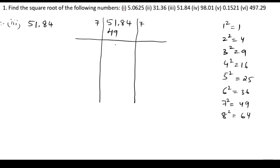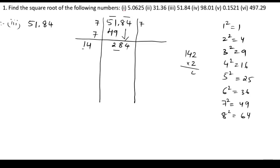The remainder is 2. We put bars on the two digits and bring 84 down, giving 284. We write 7 again, so 7 plus 7 is 14. In the 1 table, the nearest number to 2 — we know 1 times 2 is 2. So we take 142 into 2: 2 times 2 is 4, 2 times 4 is 8, 2 times 1 is 2. So we get 284.